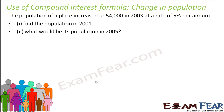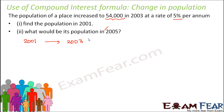Let us look at this example. The population of a place increased to 54,000 in 2003 at the rate of 5% per annum. Find the population in 2001. Looking at this problem, we see that from 2001 to 2003, the time period is 2 years.